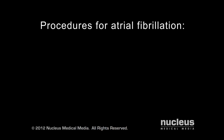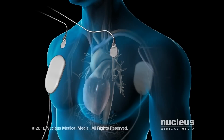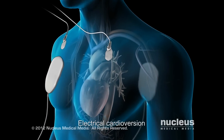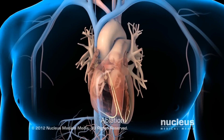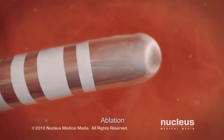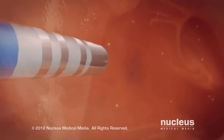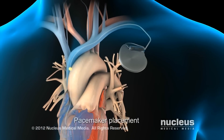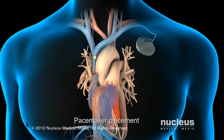In addition, your doctor may recommend procedures that restore your heart's normal rhythm and rate, such as cardioversion, ablation, or pacemaker placement. In electrical cardioversion, your doctor will give your heart a shock to start a normal heart rhythm. During ablation, your surgeon will use radio wave energy to destroy the heart tissue generating the abnormal electrical signals. In pacemaker placement, your surgeon will implant a small device under the skin, near your heart, to regulate your heart's rhythm.